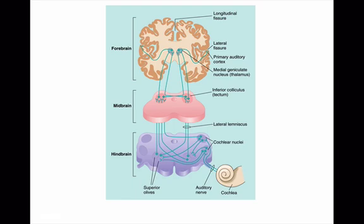And from there, fibers then ascend to the primary cortex in this lateral fissure. So right here, this lateral fissure here. So just to review, the projections from each ear are bilateral, meaning that they go to both sides of the brain. We start at the hair cells inside the organ of corti.